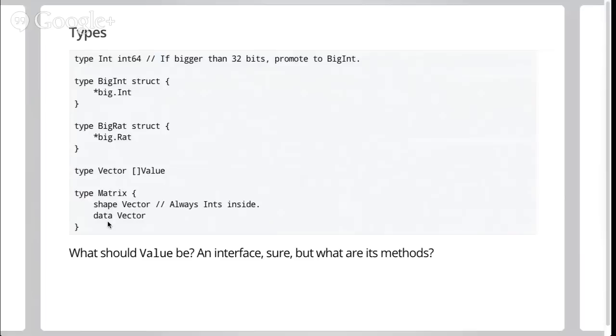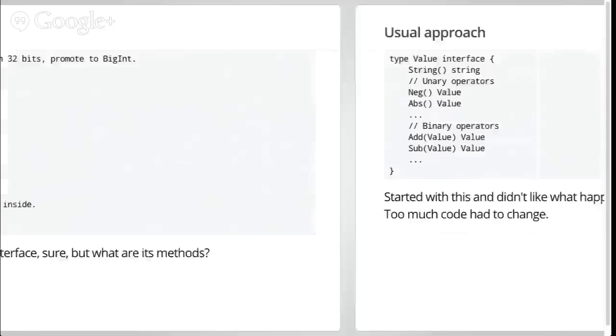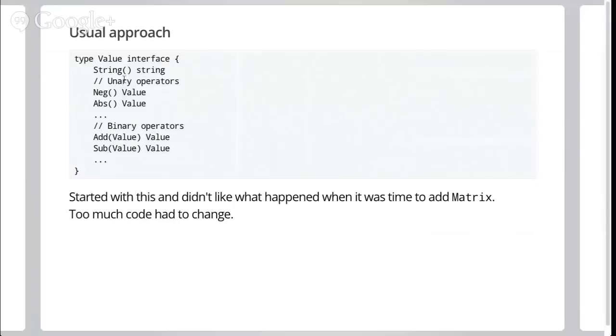And now the question is, what is a value, right? And the obvious thing to do is to make an interface. And the obvious way to design the value is like this. You say, oh, I know what a value is. It can print itself. And it also has to do negation, and absolute value, and all the other unary operators. And then it has to implement binary operators, like add, subtract, multiply, divide, max, min, all of those. And I actually wrote this code up through vector. I hadn't done matrix yet. And I started to not like it, because there's this thing that happens in these expressions.